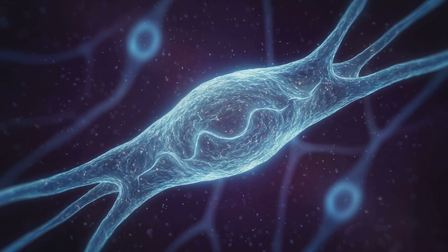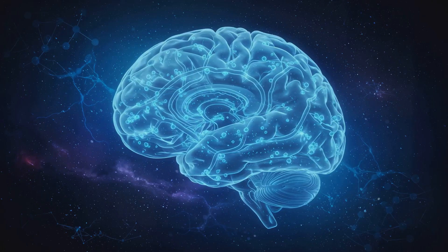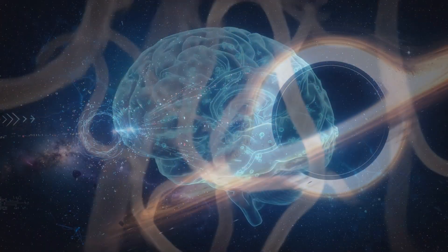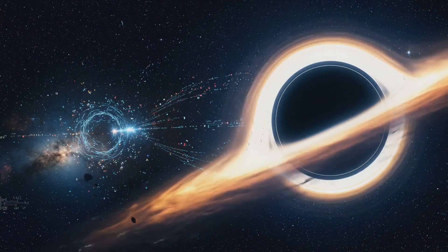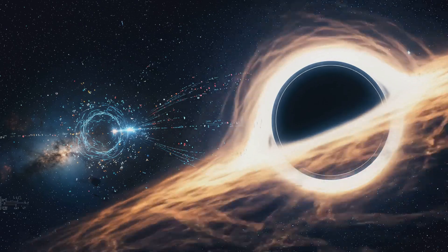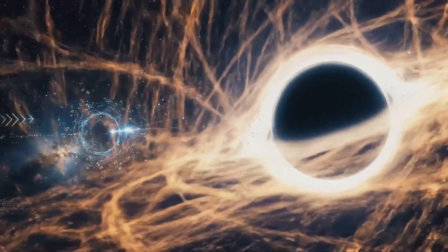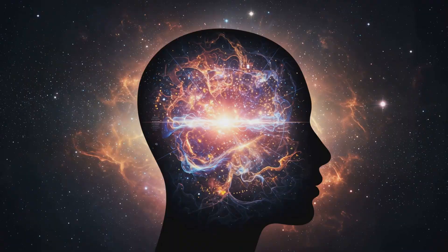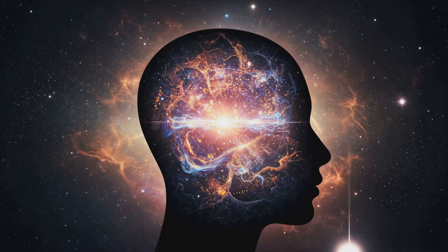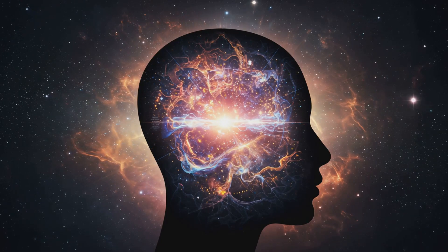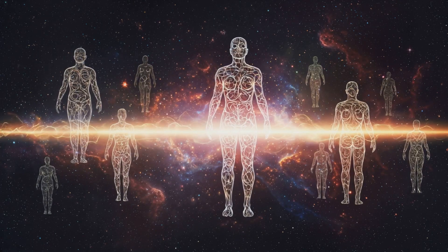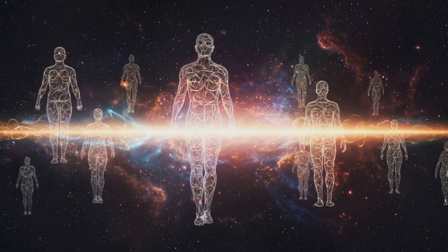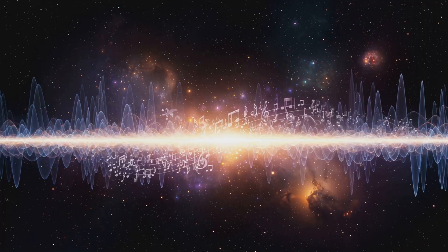Inside our brains, microtubules vibrate like biological Tesla coils. They tune into the universal broadcast. They perform the same Fourier transform that black holes do, translating spinning quantum information into experience, into consciousness. So when we think, feel, or dream, we are not separate from this process. We are it. We are harmonics in the light. The universe is not just observed by us — we are part of its projection.